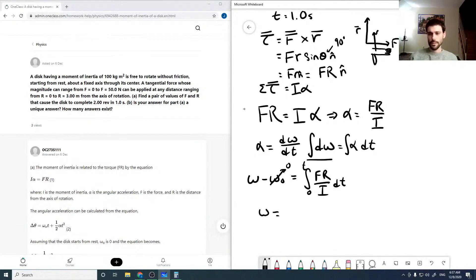The question tells us that we start from rest, so that's zero. And so omega is FR over I, as these are going to come out of the integral, times T minus zero. But of course zero is zero, so then it's just FR over I T.